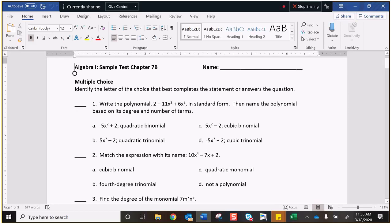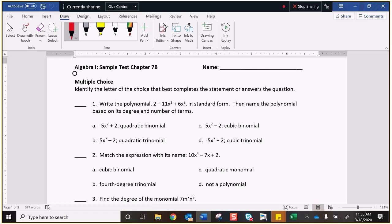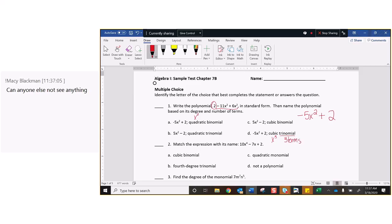Remember when you write a polynomial in standard form, they need to be in decreasing order of the exponents and you also need to have all of your like terms combined. So when we look at the first two terms, a negative 11x squared plus a 6x squared is going to be negative 5x squared, and we have the positive 2 that has nothing to combine with. So it's either a or d. And a says a quadratic binomial and d says a cubic trinomial. Quadratics have x squareds in them. Cubics would have x to the third. Trinomials have three terms. Binomials have two terms. The right answer is a.